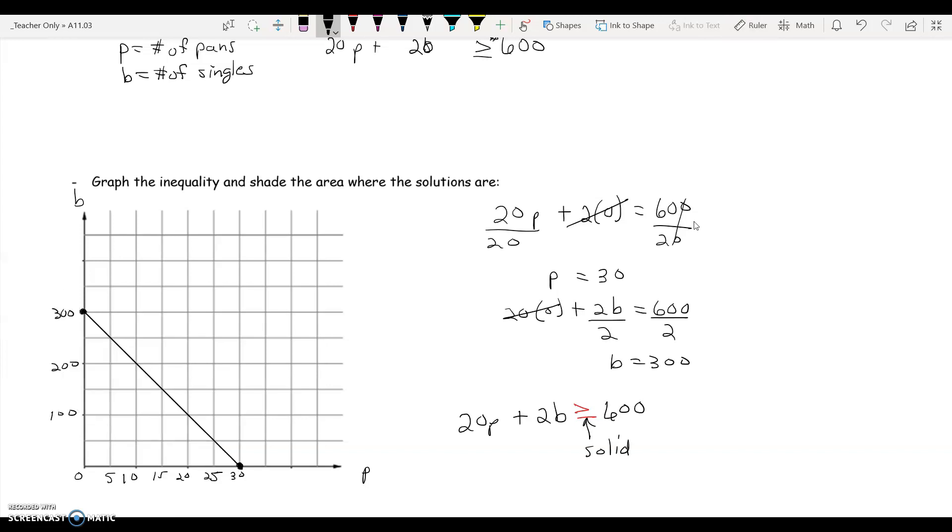Now, let's try 0, 0 in this inequality. So 20 times 0 plus 2 times 0 greater than or equal to 600. So 0 is greater than or equal to 600. That is a false statement. So that means this side of the line would be shaded.